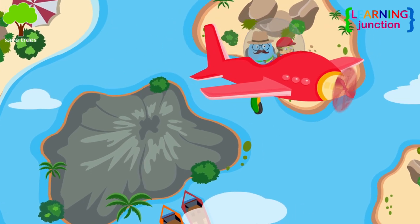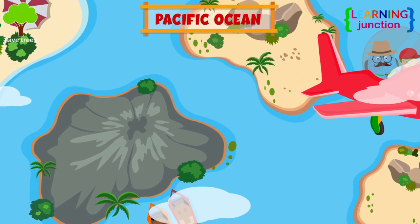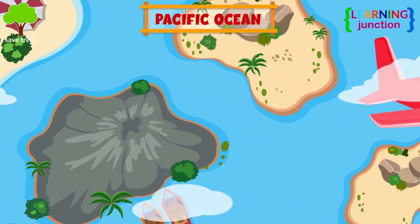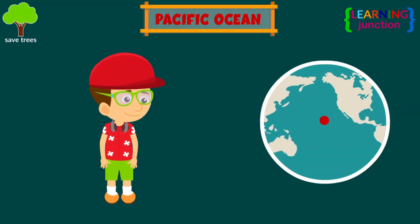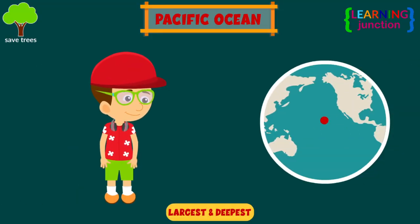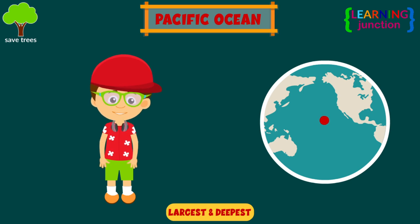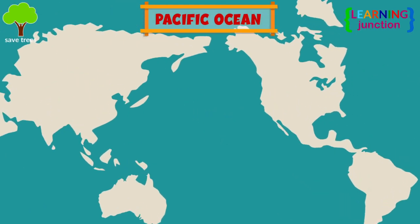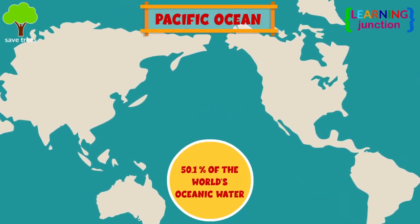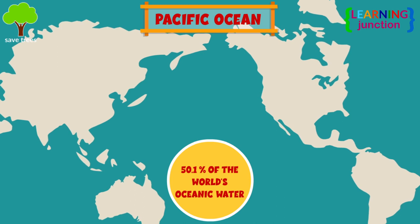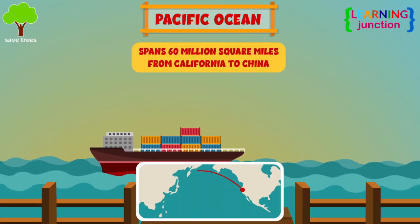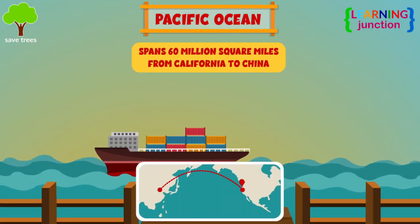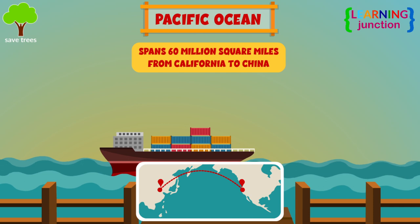At first, we'll see the Pacific Ocean. The Pacific Ocean is the largest and deepest of earth's five oceanic divisions, covering about 50.1% of the world's oceanic water. It spans 60 million square miles from California to China.